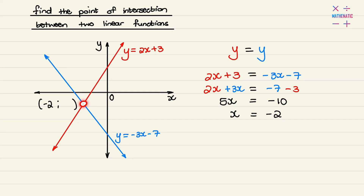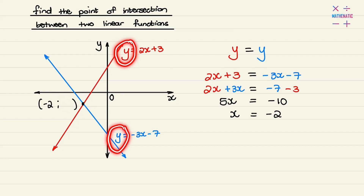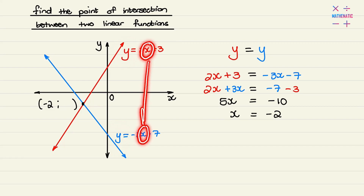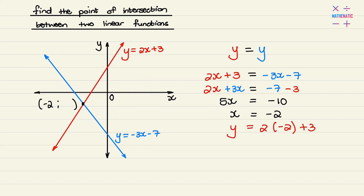So on the graph, what it means is the point of intersection between these two graphs is where x is equal to negative 2, and we only need to solve the y value. In order to find the value of y, we simply substitute x with negative 2 in any one of the two equations. I'm going to use the red equation and I'll replace x with negative 2, and if I simplify I have y is equal to negative 1.